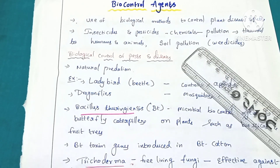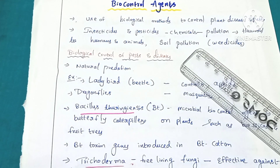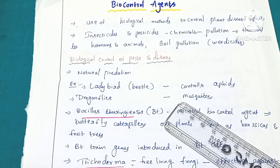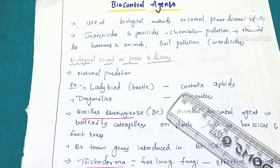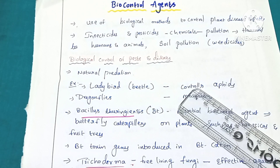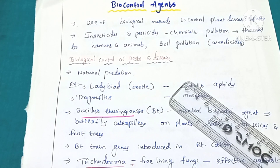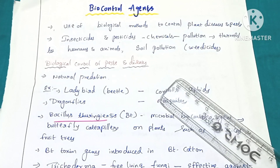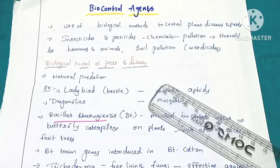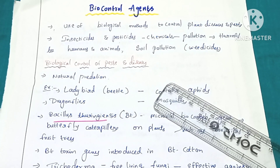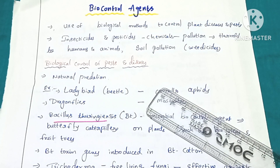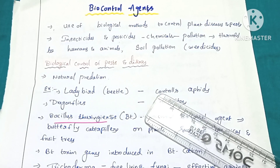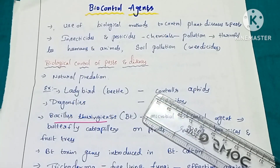Hello everyone, this is Lata Akula. This is the last video of Microbes in Human Welfare. In this video we are going to study about biocontrol agents and also biofertilizers. In agriculture, so many chemicals are used for killing pests, treating weeds, and eradicating pathogens. These chemicals cause pollution problems — air, water, and land pollution — and may accumulate in fruits and vegetables, causing cancer, hormonal problems, and many diseases.